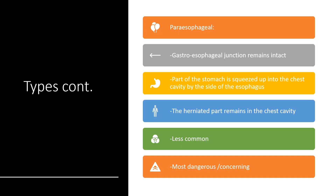The second type of hiatal hernia is known as paraesophageal hernia. Here, the gastroesophageal junction remains intact in the abdominal cavity, but part of the stomach is squeezed up into the chest cavity by the side of the esophagus — that is why it is called paraesophageal, meaning 'by the side of the esophagus.' This type is less common, but it is the most dangerous and of greater concern.